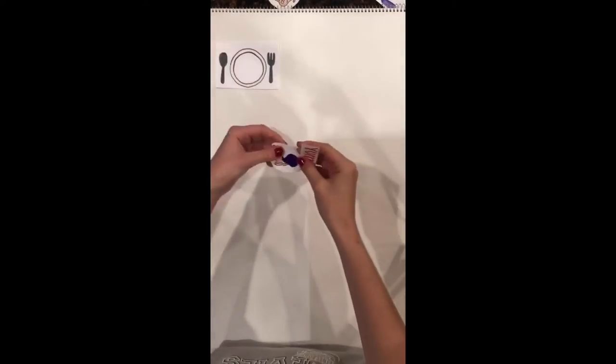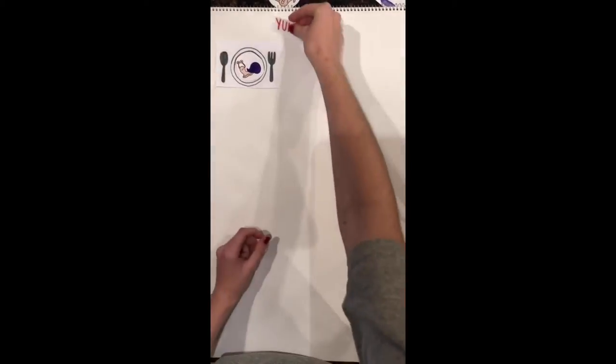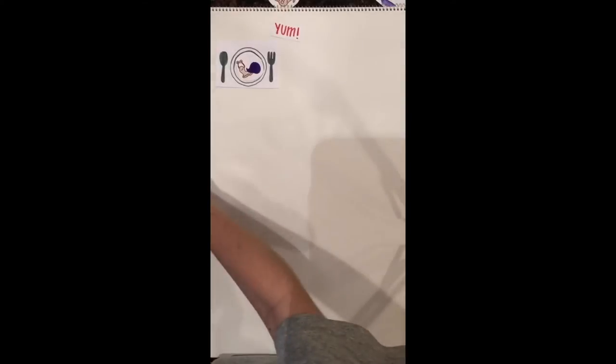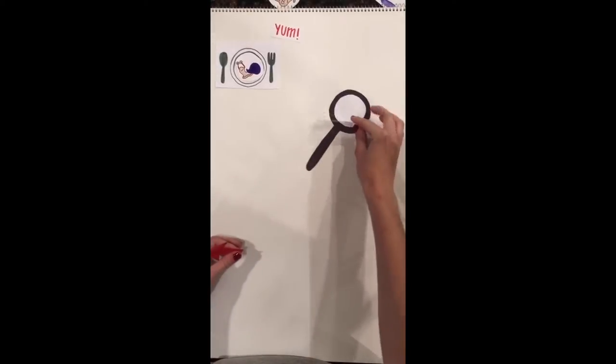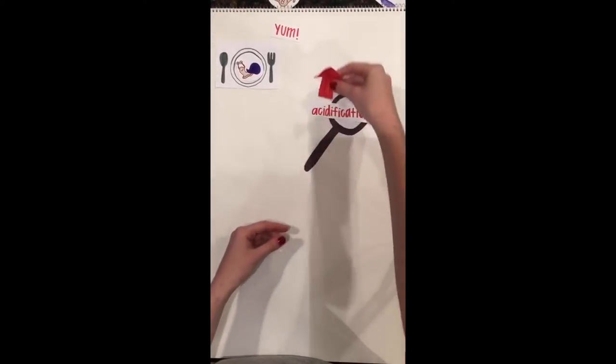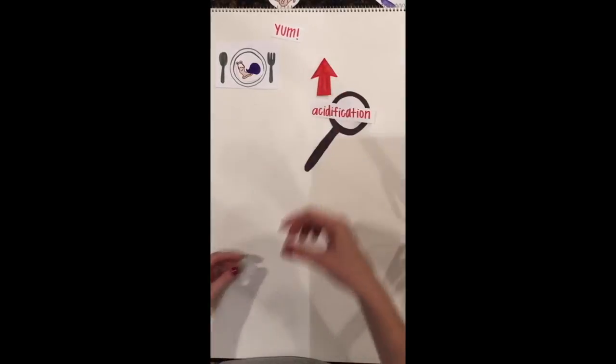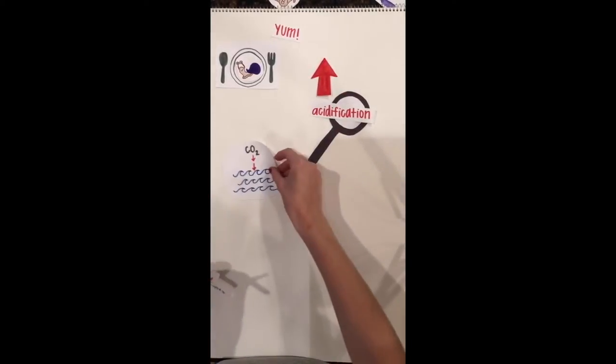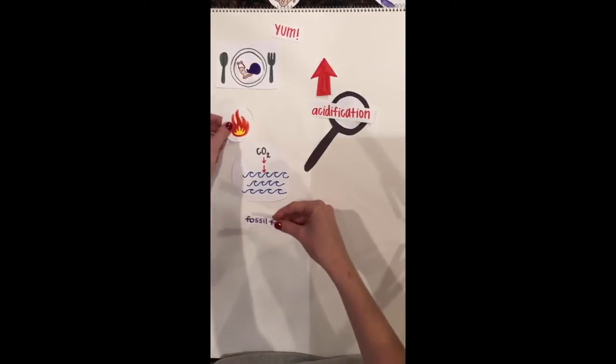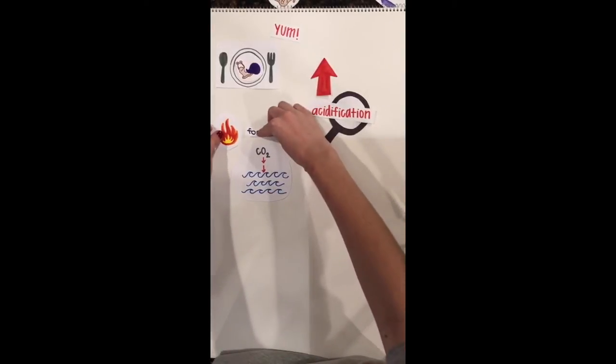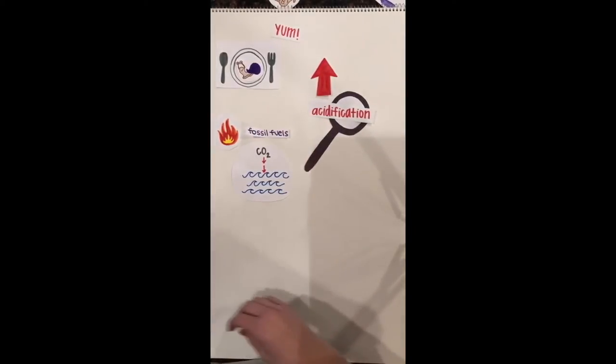Although sea snails may seem insignificant, they are not only a food source to other organisms, but they actually play a role in identifying the increasing acidification of our oceans. When humans increase the amount of CO2 released into the atmosphere through the burning of fossil fuels, the acidification of our oceans increases.